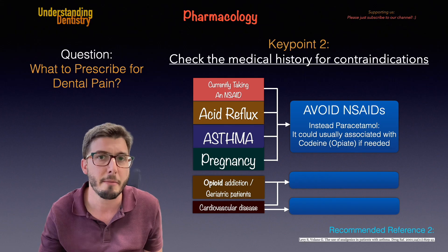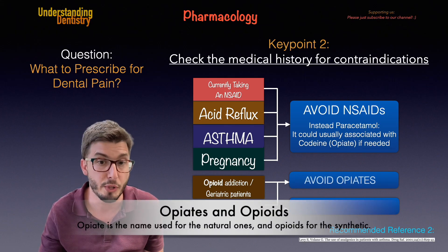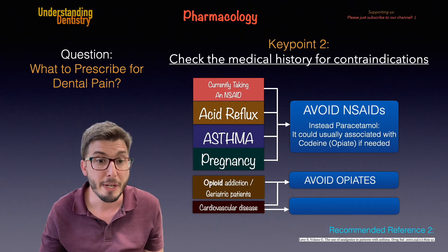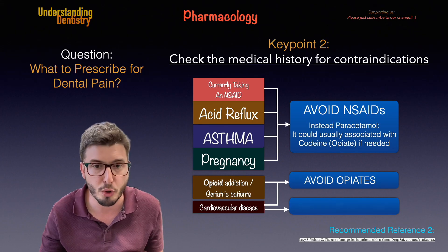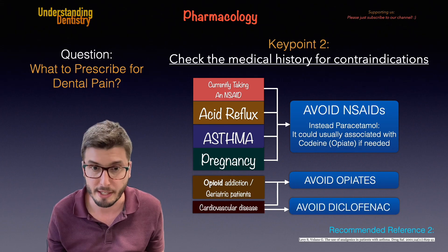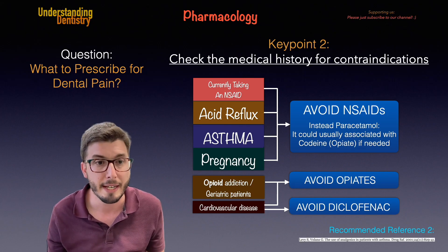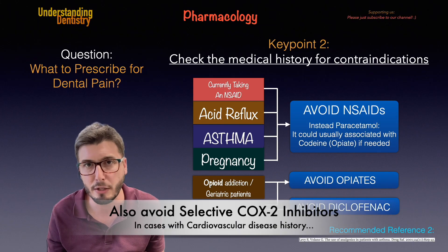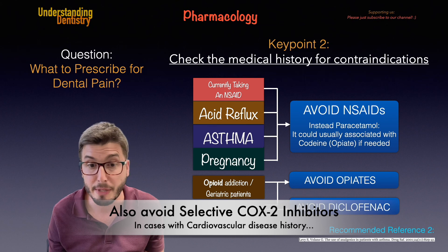For cases of opioid addiction, opioids should be avoided. For geriatric patients, opioids can cause constipation and other issues. For patients with cardiovascular disease, it's very important not only to avoid opiates but also to avoid diclofenac drugs — for example, sodium diclofenac (Voltaren) or potassium diclofenac (Catafast or Cataflam).